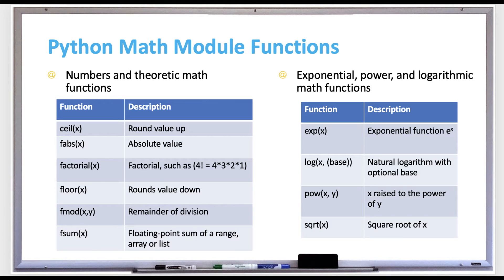Here's a list of some of the math module functions. The table on the left shows number-theoretic math functions. Some of the functions are: ceil for the ceiling function — rounding a value up; fabs for absolute value; factorial to get the factorial of a number (for example, 4 factorial is 4 times 3 times 2 times 1); floor to round a value down; fmod to get the remainder of division; and fsum to get a floating-point sum of a range, array, or list.